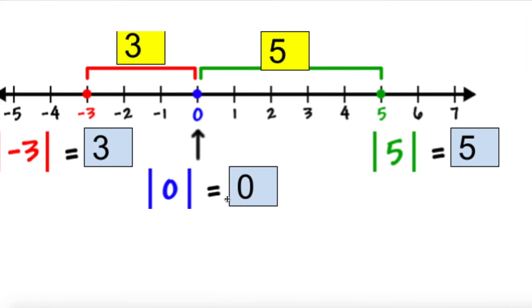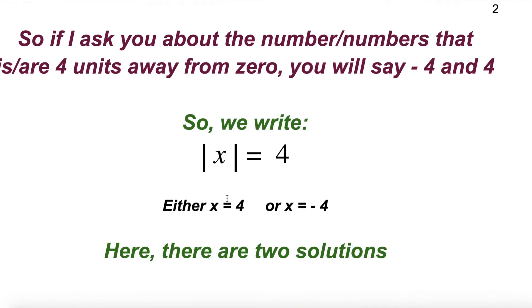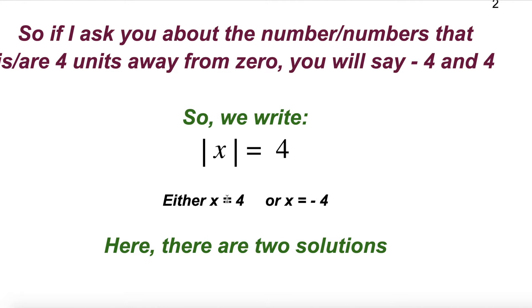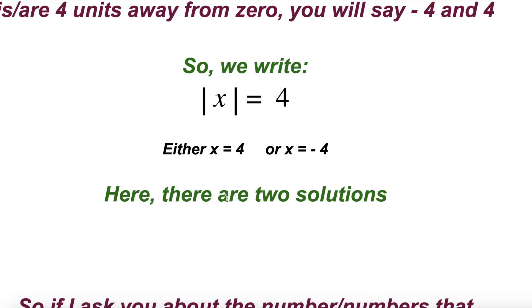If I ask you which numbers are 4 units away from zero, you would say negative 4 and positive 4. Similarly, the numbers 5 units away from zero are positive 5 and negative 5. Now, if I give you the answer and ask you to find x — that is, solving equations — then for the absolute value of x equals 4, you have two choices: either x equals 4 or x equals negative 4.